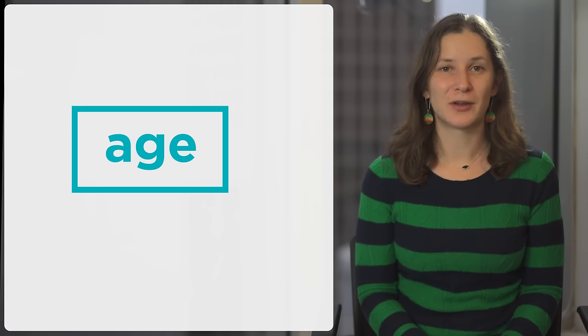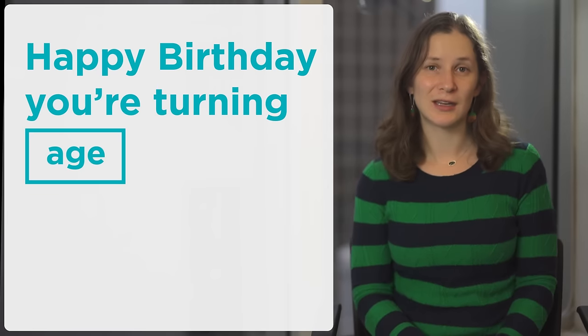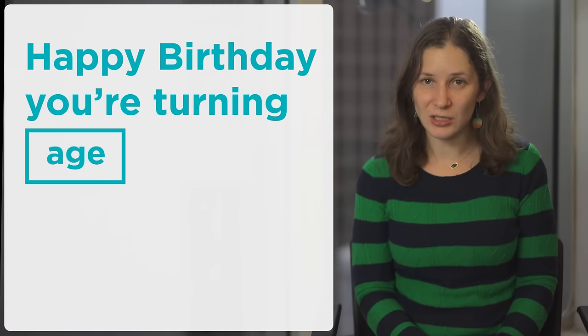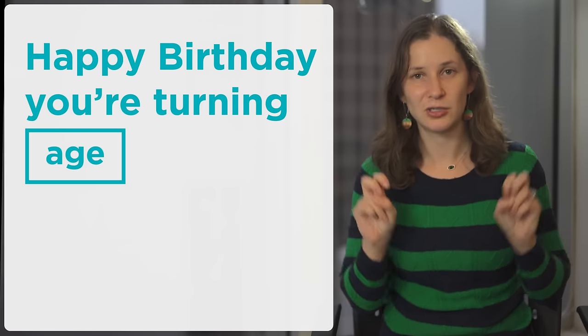I could create a variable called age to store my brother's age and write my algorithm to say happy birthday, you're turning age instead because variables can change. Each year I can update the variable age to equal age plus 1.